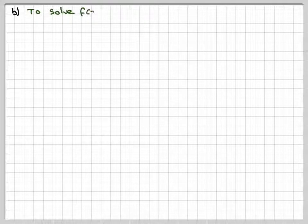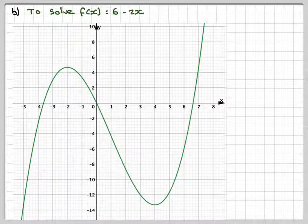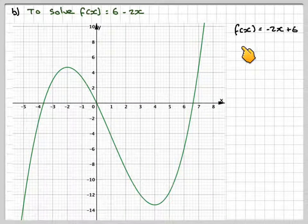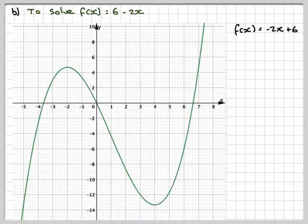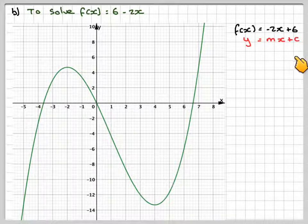Right, part B, we need to solve the equation 6 minus 2x. F of x is equal to 6 minus 2x. So if we rewrite that as f of x is minus 2x plus 6, and that's similar to y is equal to mx plus c.